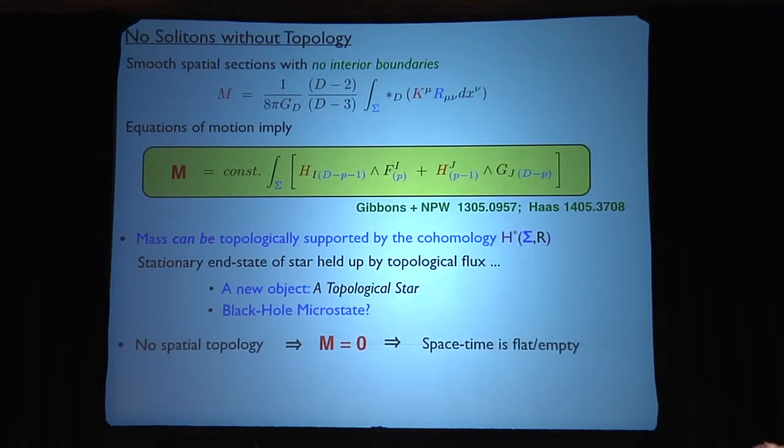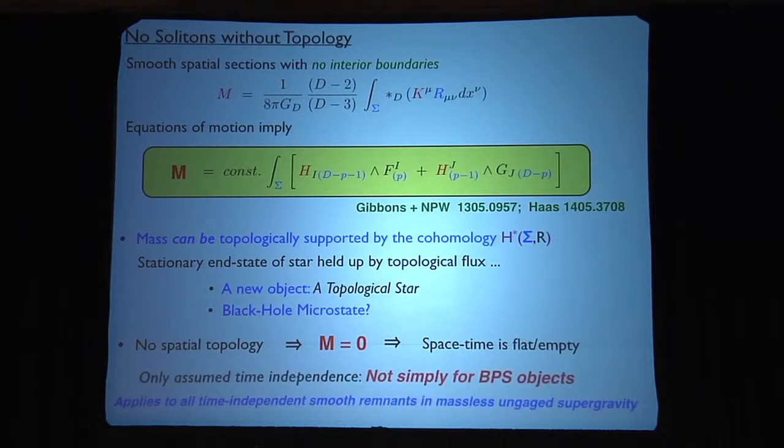Now, the old theorems ignored the presence of topology in the spatial surfaces, concluded therefore that m had to be zero, and therefore there were no such solitons. But there are solitons, and the theorem is, they can only exist if they're topologically supported. So to stress, I didn't assume anything about BPS. This is completely general. So if you want a mechanism within the massless sector of string theory, this is the only mechanism there is. You have to support it by fluxes on bubbles of topology.